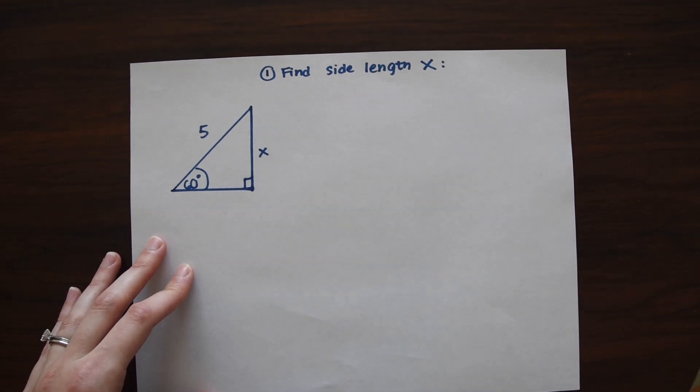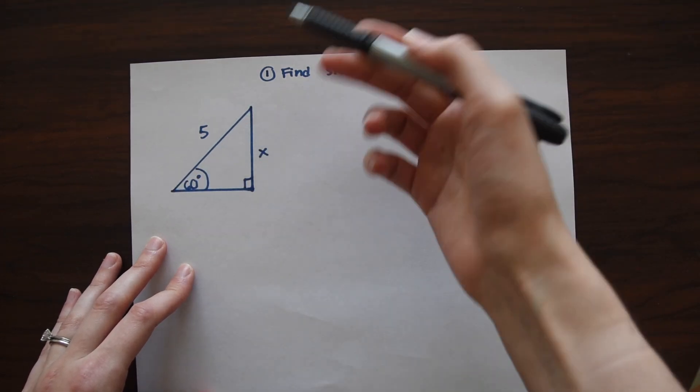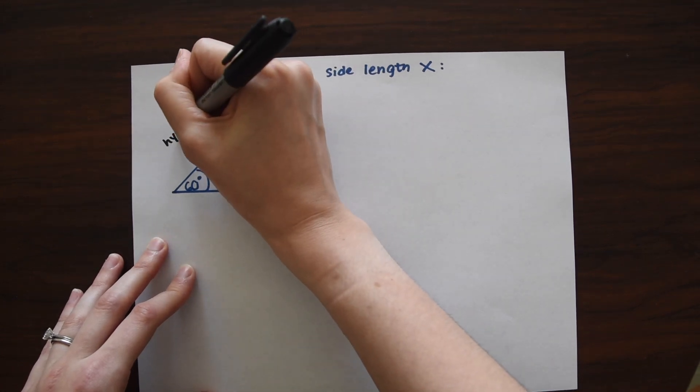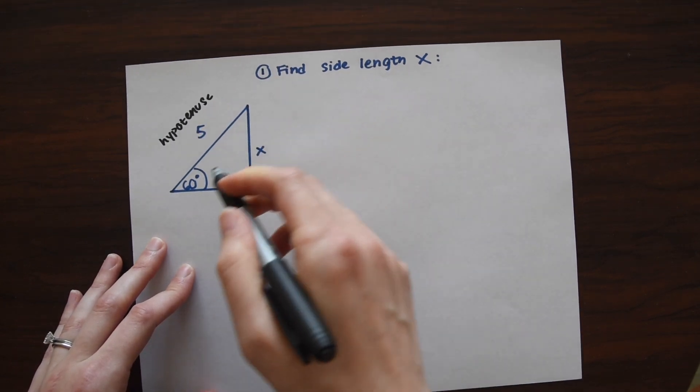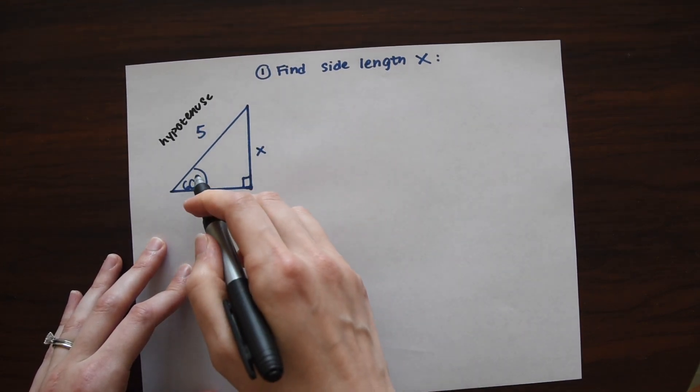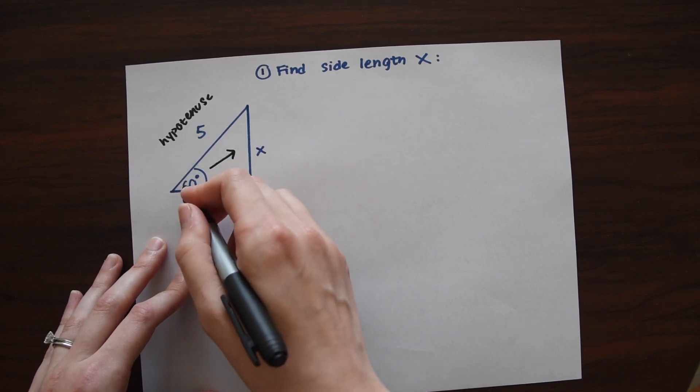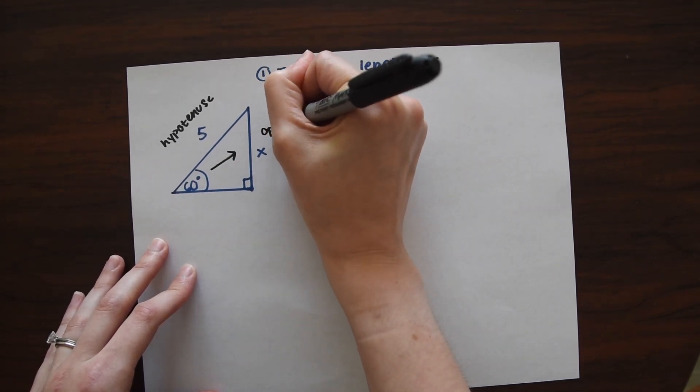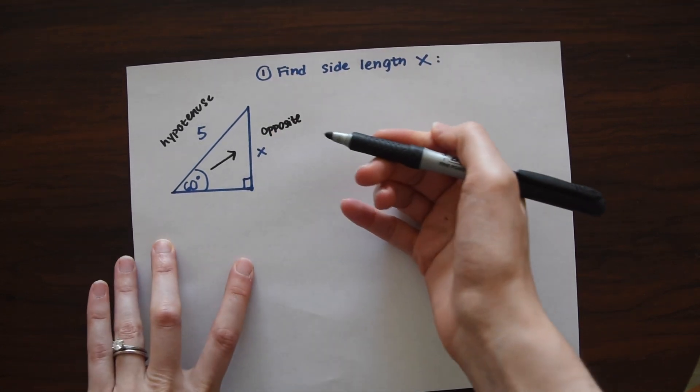So before we do anything, let's first label the parts of the triangle we have here. So the longest side right here is going to be the hypotenuse. So we know we have the hypotenuse, we have our angle, and then what side do we have here? This is the opposite to this angle. So we have the opposite. And this is the side length we're trying to find.